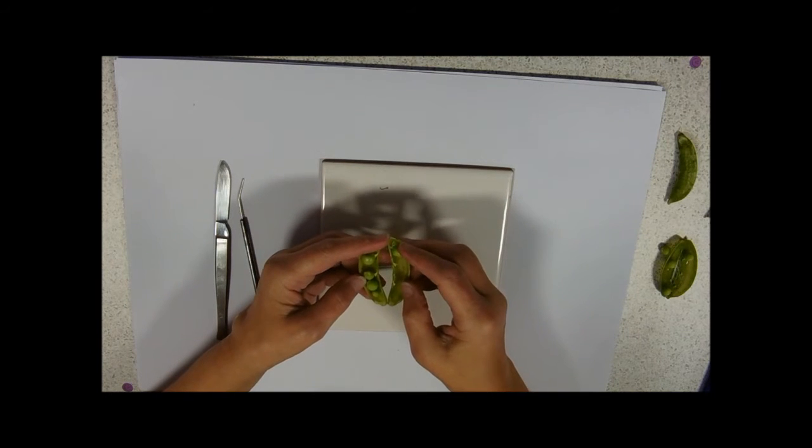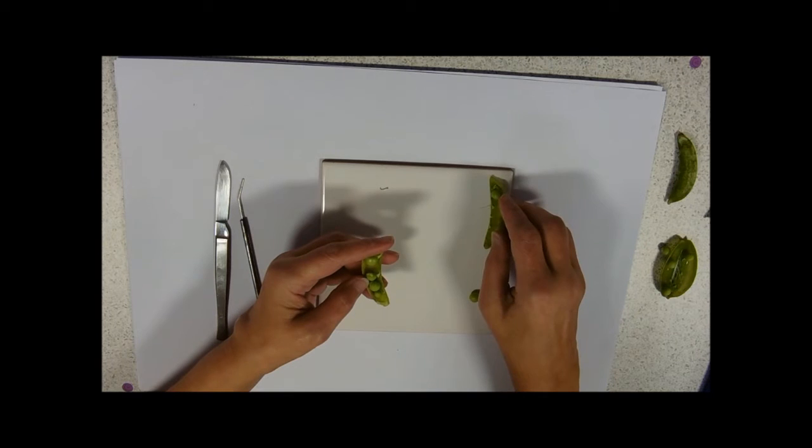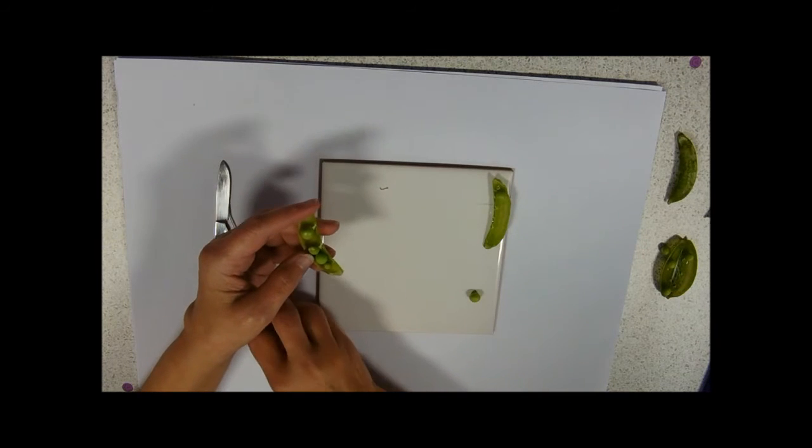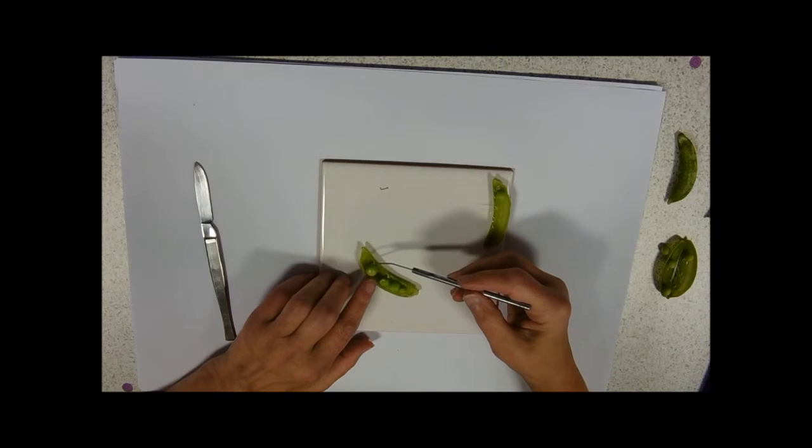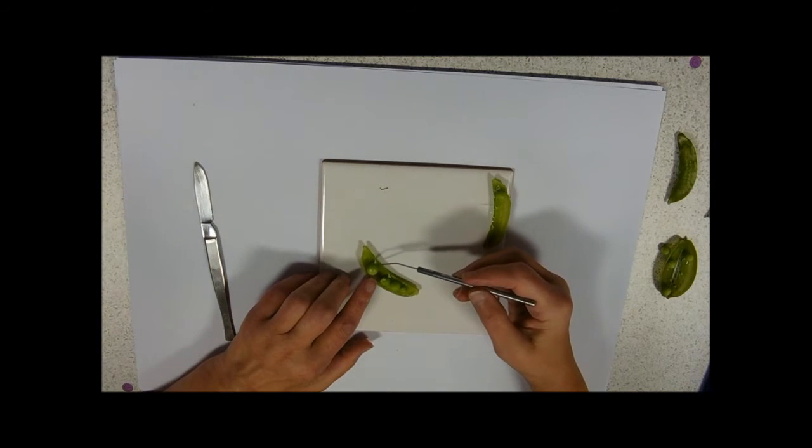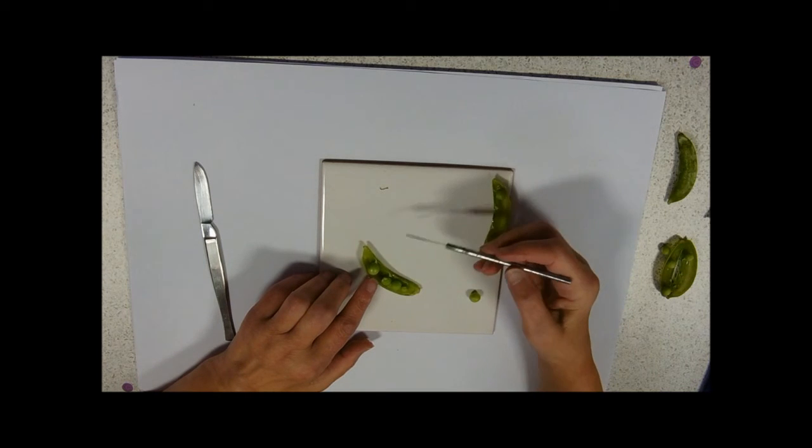Now just while I've got this pea pod open, this bit here is called the funicle and it attaches the pea to the pod and therefore to a nutrient supply.